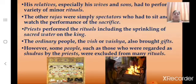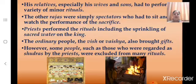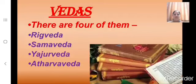Priests performed the rituals, including the sprinkling of sacred water on the king. The ordinary people, the Vish or Vaishya, also brought gifts for the kings. However, some people who were regarded as Shudras by the priests were excluded from many rituals. Children, how many Vedas are there? There are four of them — can you name them?